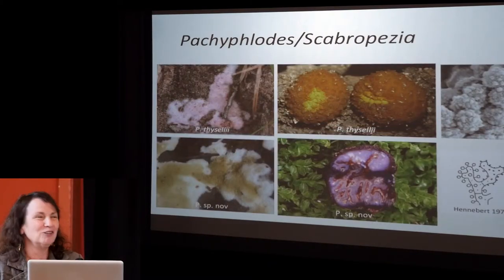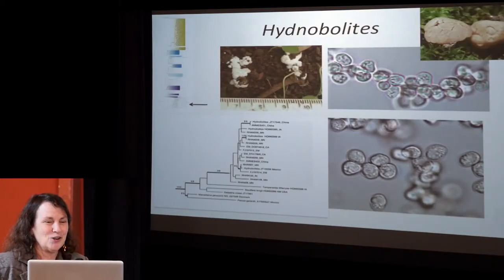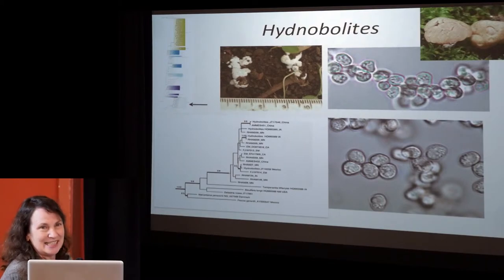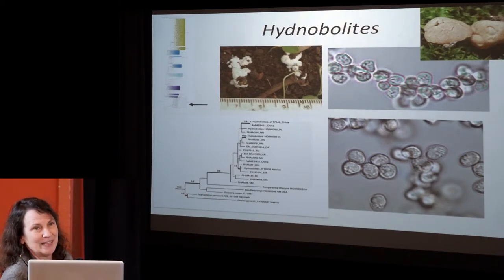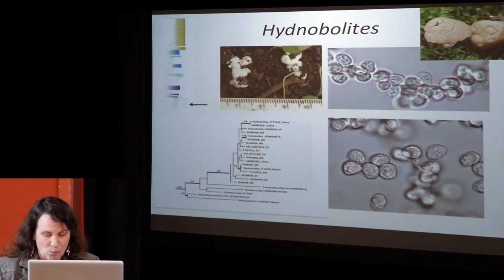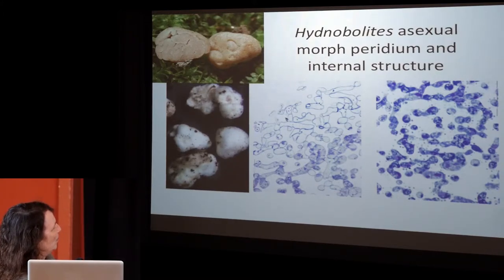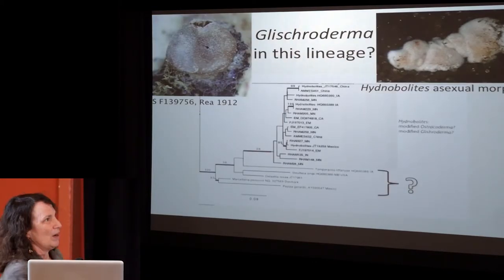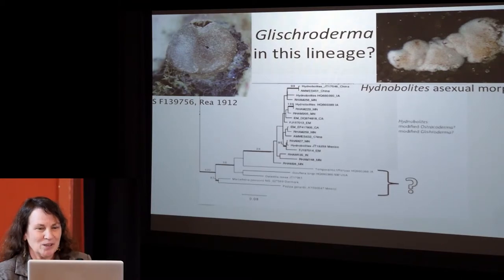I'm going to speed ahead to show you the colorfulness of Pachyphlodes and Scabropesia, and that the spore mats are pretty consistent within the clades. Here is a spore mat I'm hopeful somebody has seen before — it's in a lineage that is not well studied. This is Hidnobelides, another truffle. It produces spores that are absolutely smooth but have an angular appearance. Because it has a more robust peridium than Pachyphlois, I'm wondering if this peridium — very different from the spore-producing part — might be what we're seeing in Gliscoderma. I'm also very curious about these lineages including Peziza gerardii, so there's lots more collecting and looking to do.